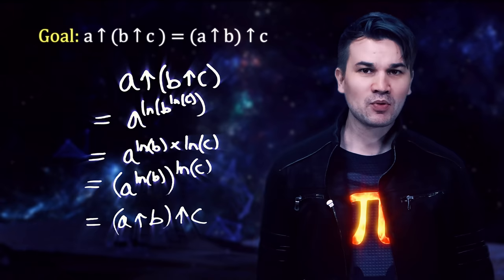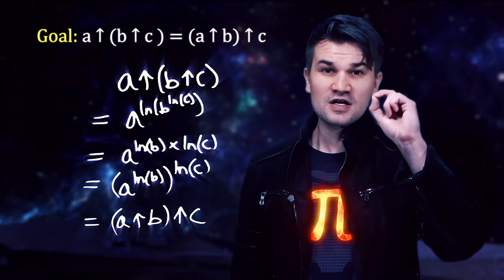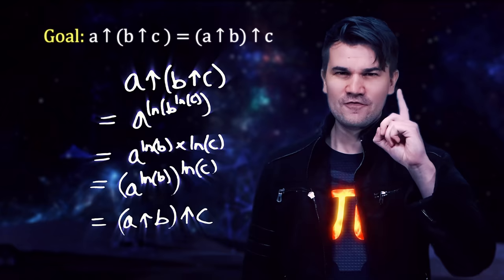So at this point, we have a commutative associative binary operation that distributes over multiplication. Things are looking very nice at this point. Next question we can ask, identity. Is there an identity? Well, let's see.